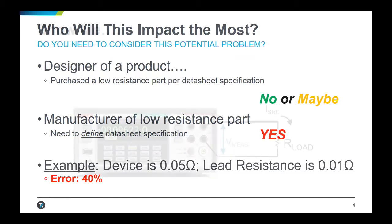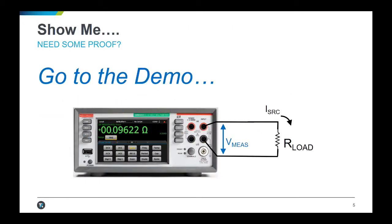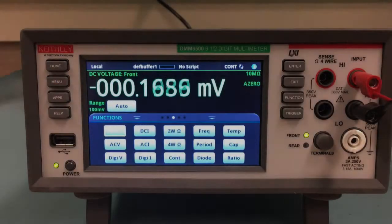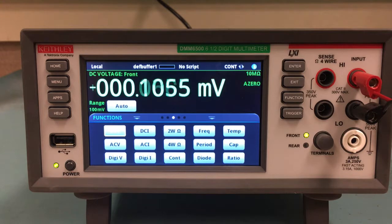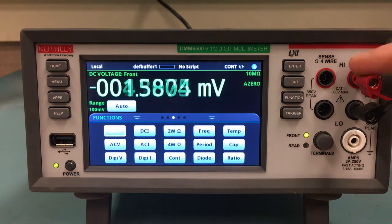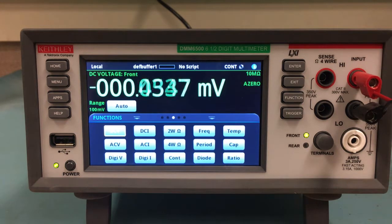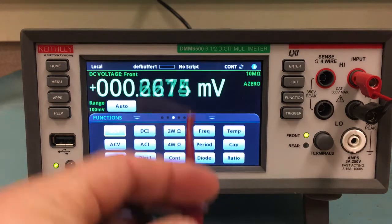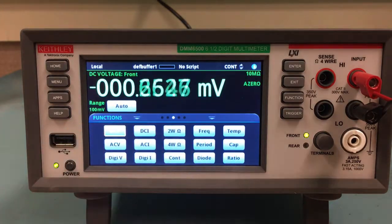Let's start by making a common two-wire resistance measurement. As you can see on the right-hand side here, I have my high and low terminals connected to my test leads.